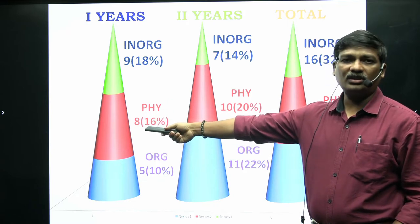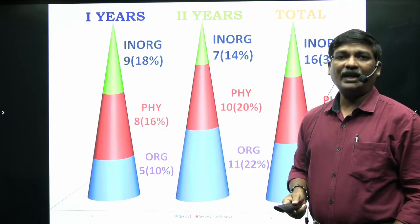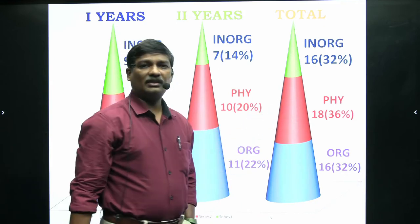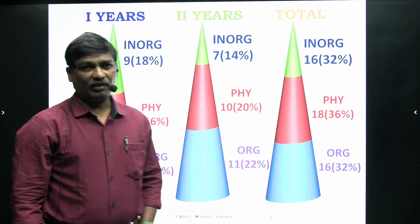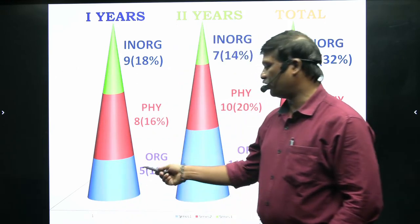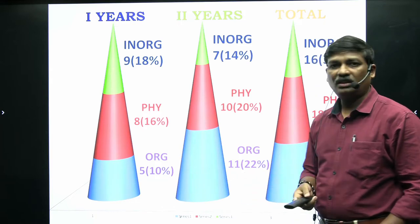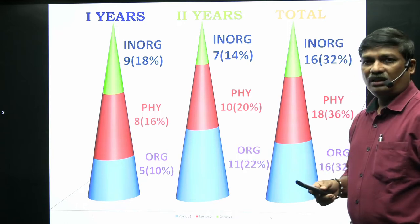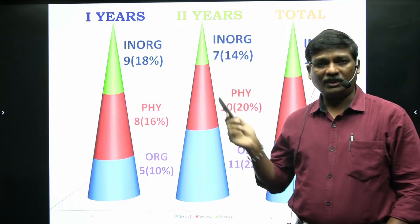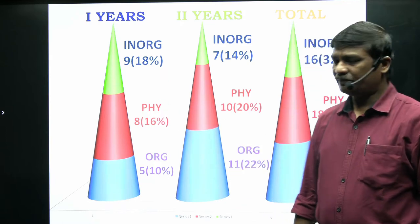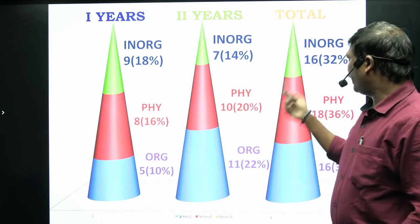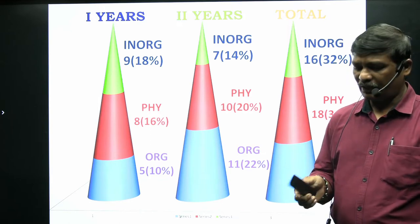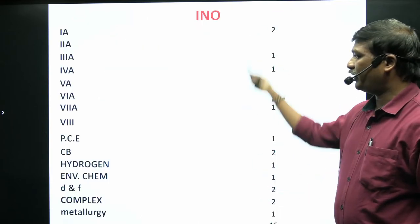From physical chemistry, first year gave 8 questions (16%) and second year gave 10 questions (20%), totaling 18 questions — 36%. From organic chemistry, first year gave 5 questions and second year gave 11 questions, totaling 16 questions — 32%. Physical chemistry had the highest share at 36%, slightly more than inorganic and organic at 32% each.